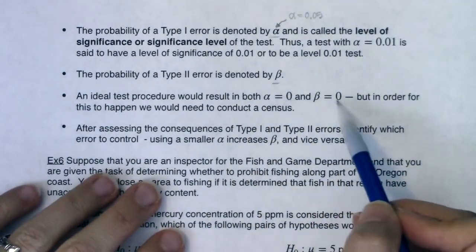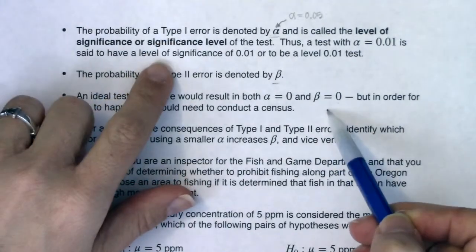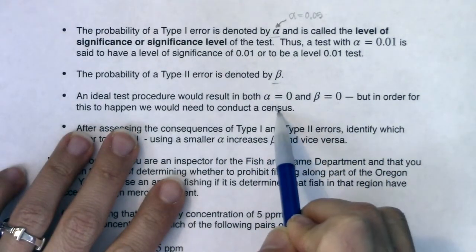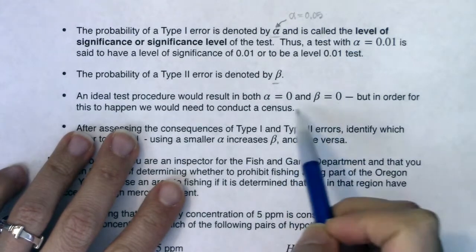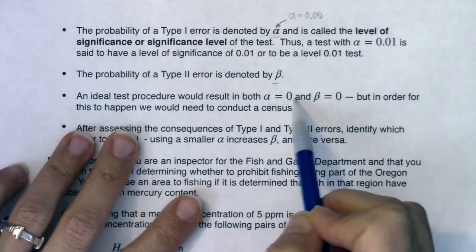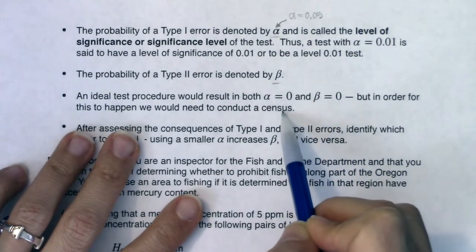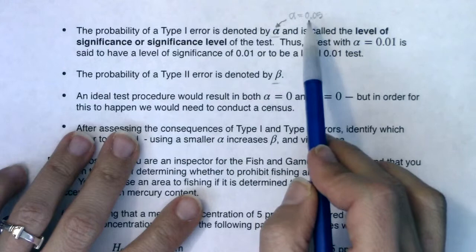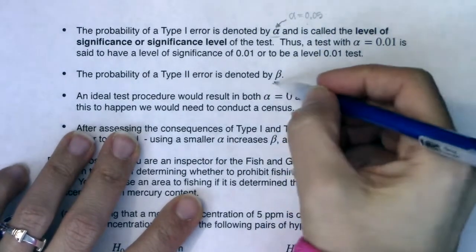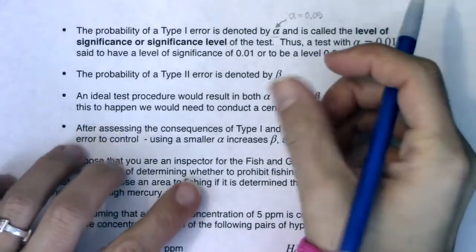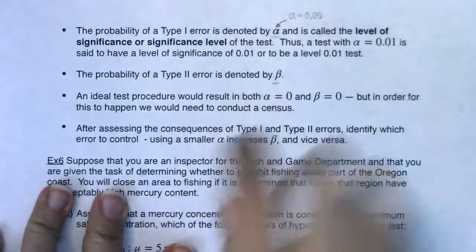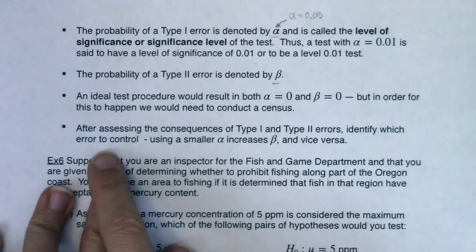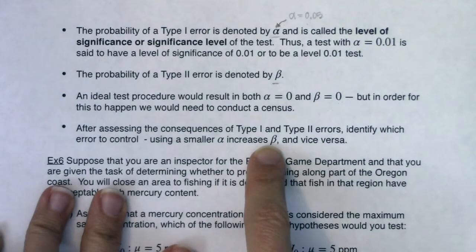Ideally they would both be zero — you'd never make a type 1 or type 2 error. But in order for that to happen, you would have to run the census, and we're not going to do that — it takes a lot of time and money. So we're going to have some kind of alpha and beta. You will set your alpha; from that alpha choice, your beta will be determined. After you assess the consequences of your type 1 and type 2 errors, identify which error to control. Using a smaller alpha increases beta, and using a larger alpha decreases beta.